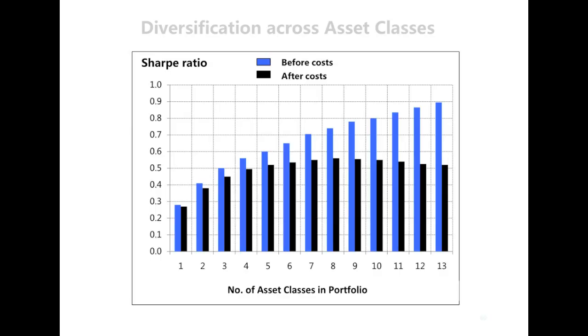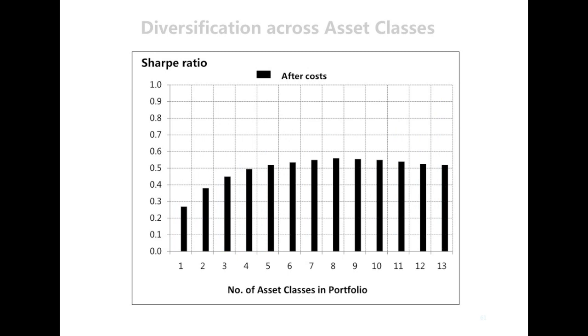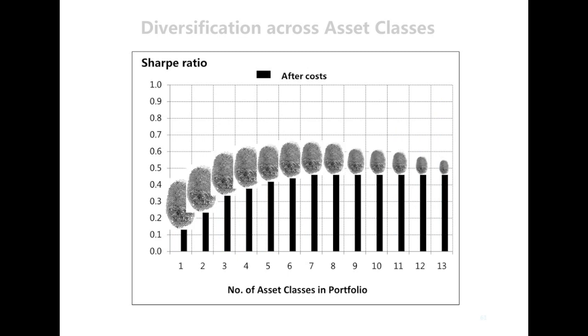But so far, we're ignoring one crucial element — that of costs. Every transaction involves costs, and the more asset classes contained in a portfolio, the heavier the cost burden becomes. And this has a noticeable impact on Sharpe ratios. Adding the dirty thumbprints to give an idea of variation of outcomes, we can see that there clearly is such a thing as over-diversification.